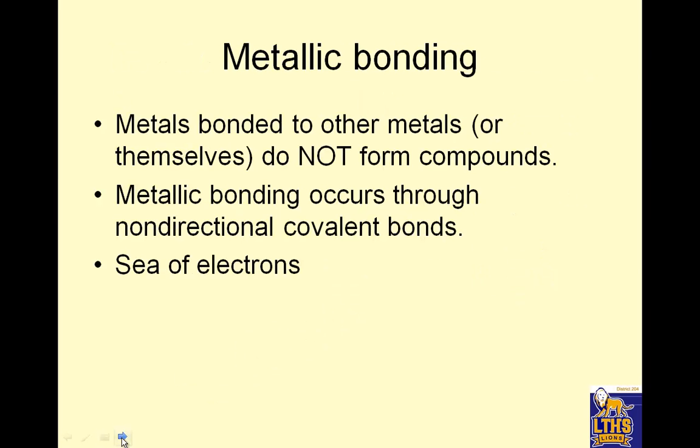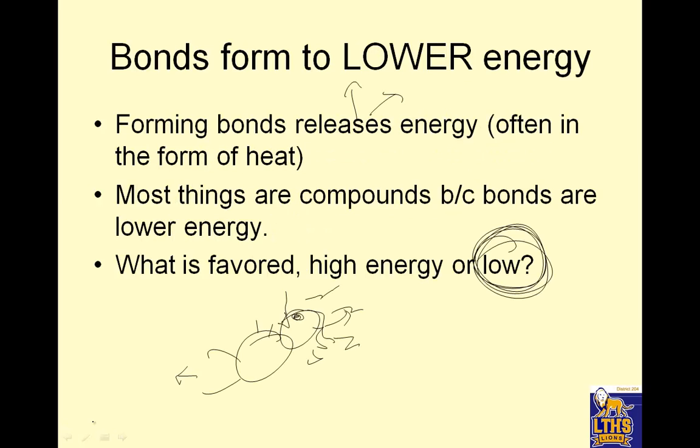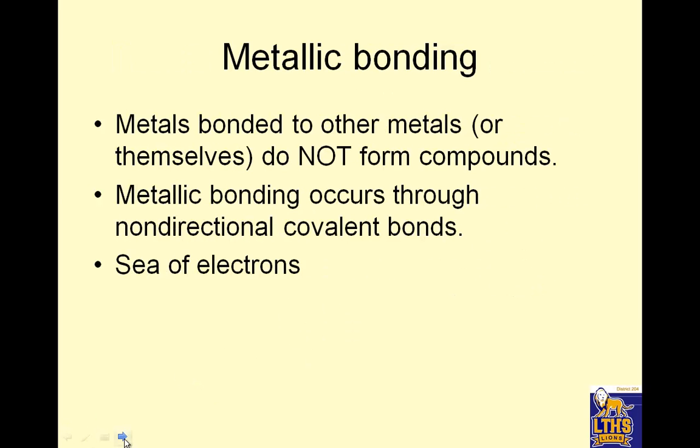Metallic bonding - metals bonded to other metals or themselves. For example, aluminum bonded to another atom of aluminum would have metallic bonding, or aluminum bonded to zinc. They do not form compounds, they're called alloys. Metallic bonding occurs through non-directional covalent bonds.